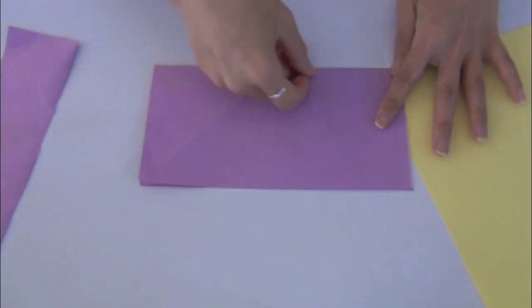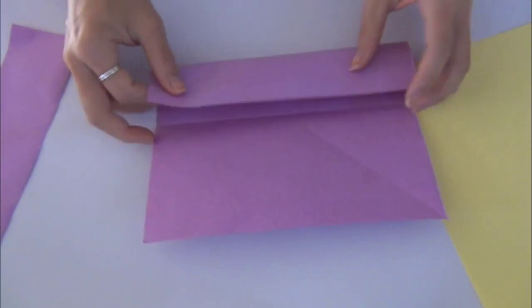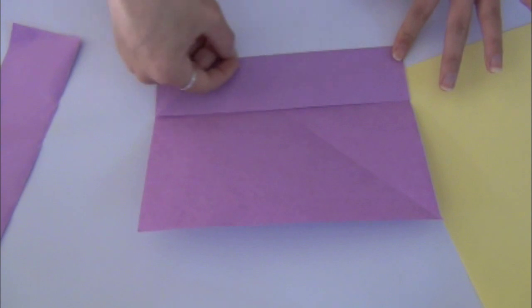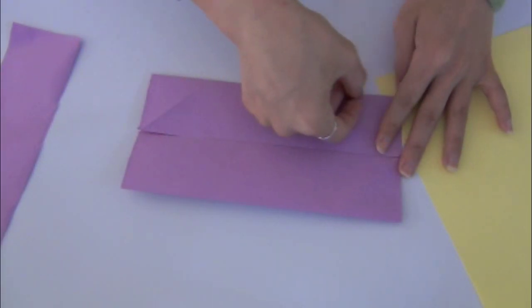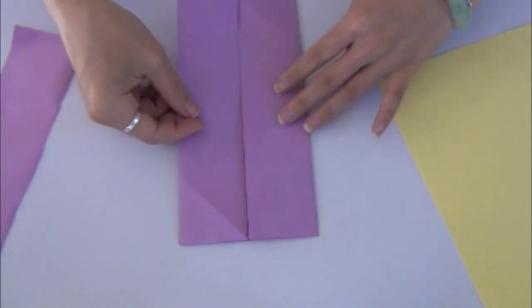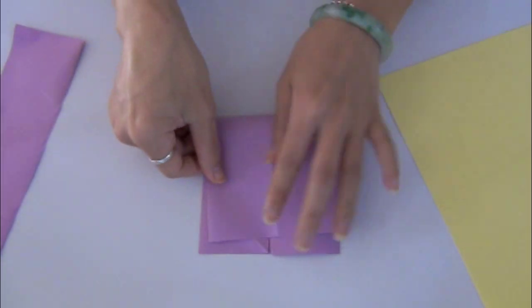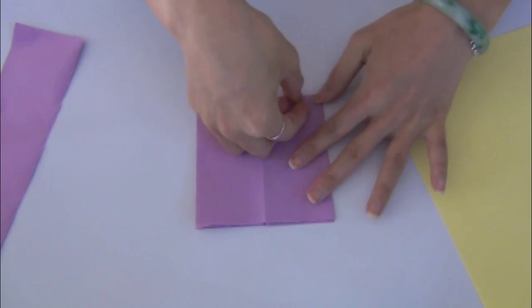When you have your perfect square, fold the paper in half to create the center crease, then unfold the paper. Fold one end of the paper into the center crease. Do the same to the opposite side.